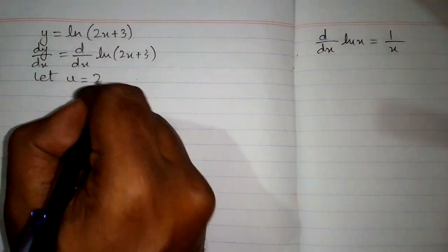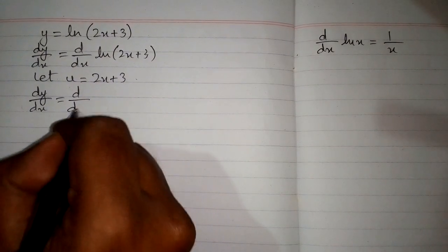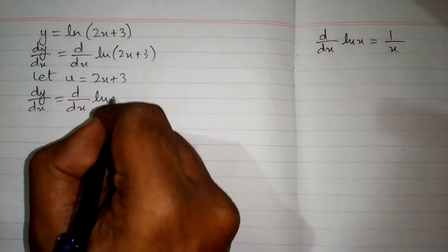So first let u equals 2x plus 3. So we have dy by dx equals d by dx of ln of u.